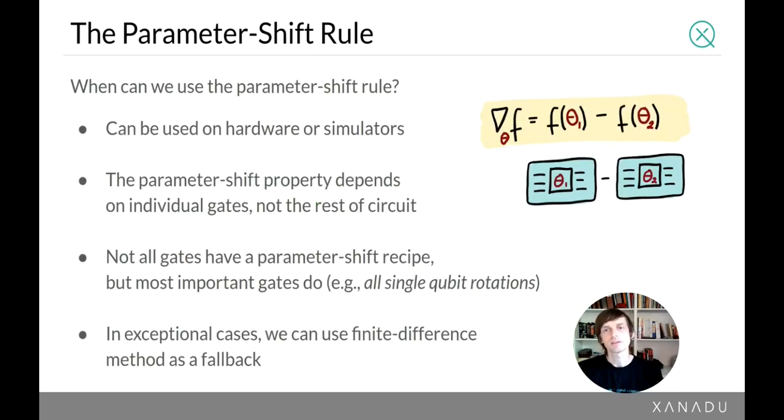So back to the parameter shift rule, when can we use it? As I said, it's an exact rule. So what this means is it can be used both on hardware and on simulators. So anytime where you are determining the output of a quantum circuit, you can use the parameter shift rule. And it doesn't have to be a physical hardware, but it's really cool that it can be physical hardware because it allows you to just query the same device without changing the architecture at all.